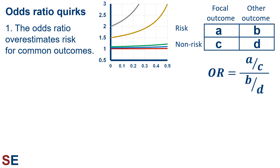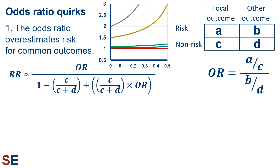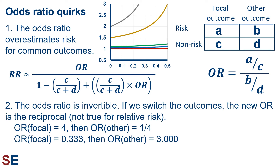Keep in mind that for many types of data, the odds ratio is the only value we can calculate. But on the bright side, if we calculate the odds ratio for focal outcomes that are rare, then the odds ratio will give us a good estimate for the relative risk. In fact, there is an equation that relates these two values, which allows us to estimate the relative risk from the odds ratio. The second quirk is that the odds ratio is invertible. If we switch the outcomes, the new odds ratio is the reciprocal, which is not true for relative risk. For example, if the odds ratio for the focal outcome is 4, the odds ratio for the other outcome would be 1/4. Likewise, if the odds ratio for the focal outcome is 0.333, then the odds ratio for the other outcome is 3.